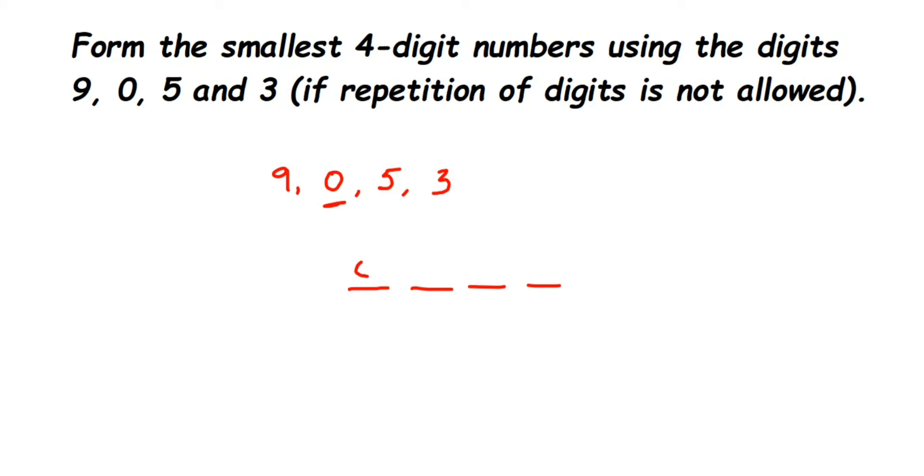The next smallest number after zero, out of these four digits, is 3. And the next smallest after 3 is 5, and the last one is 9. It's simply like you are arranging the numbers in ascending order.